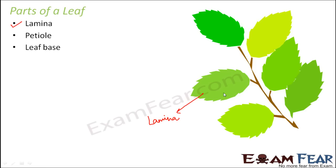Petiole is nothing but a green-colored stalk which holds the leaf or attaches the leaf to the stem. That stalk-like structure is known as petiole. The third part is the leaf base — that is the basal part of the leaf. The point of the stem from where the leaf arises is called the node, and the part of the leaf which attaches it to the node is known as the leaf base. So these are broadly the three parts of a leaf.